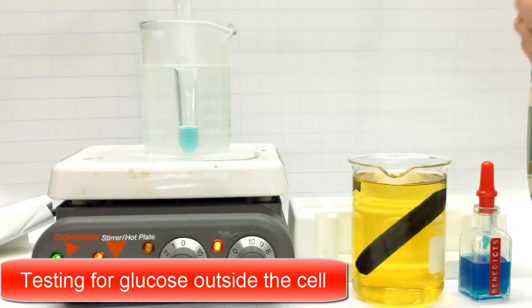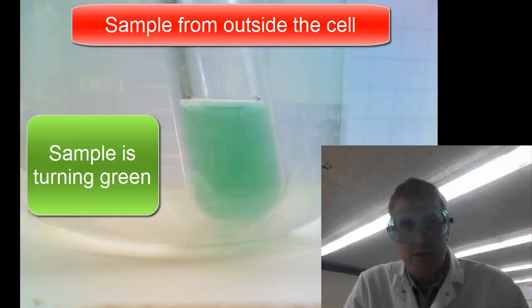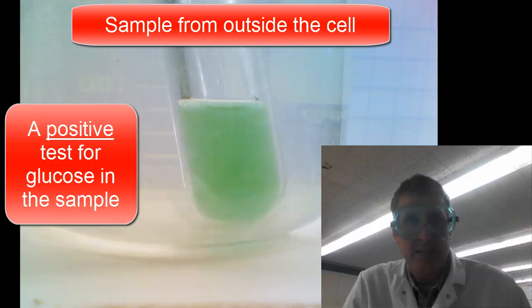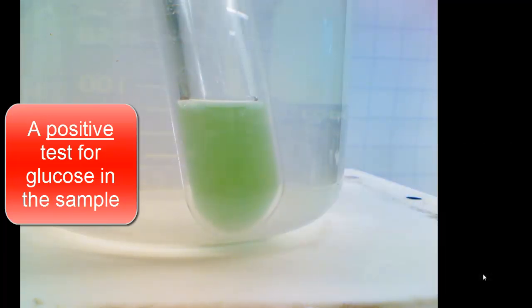This will indicate whether glucose was able to diffuse through the membrane. As you can see, we're just beginning to get a reaction. It's just beginning to turn a little bit green, and that is an indication that glucose is present. We now have all the information we need to complete part 1 of the diffusion lab. I hope that was helpful.